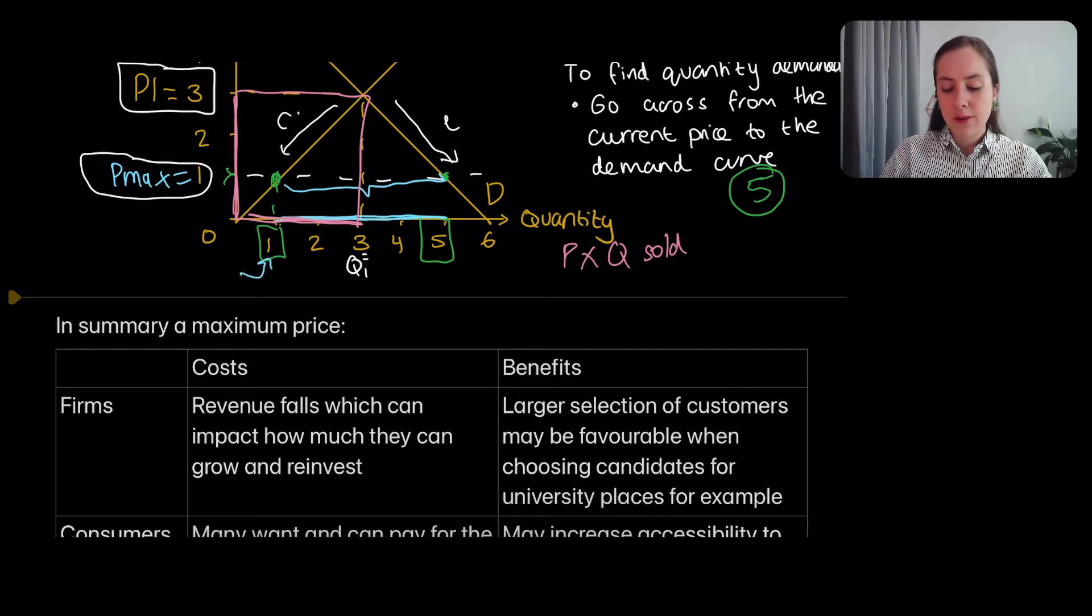And now that the maximum price has been set, only 1 unit is going to be sold because only 1 unit is available to be supplied. This is the quantity that's been sold. And they're just selling this for 1. So their revenue is really small now. It's 1 height, 1 across. That little box. So that revenue has really decreased from the pink area to the small blue area.